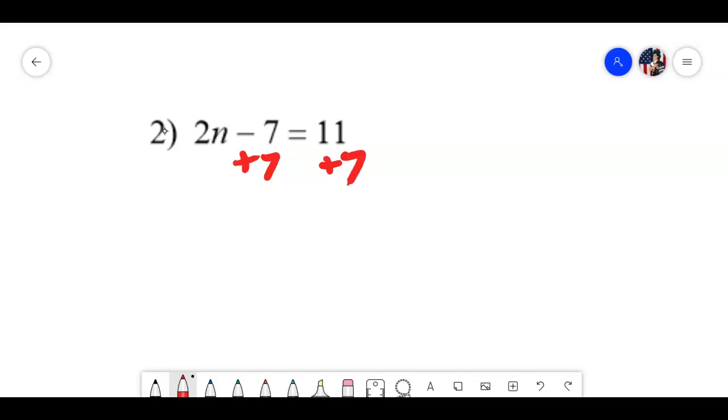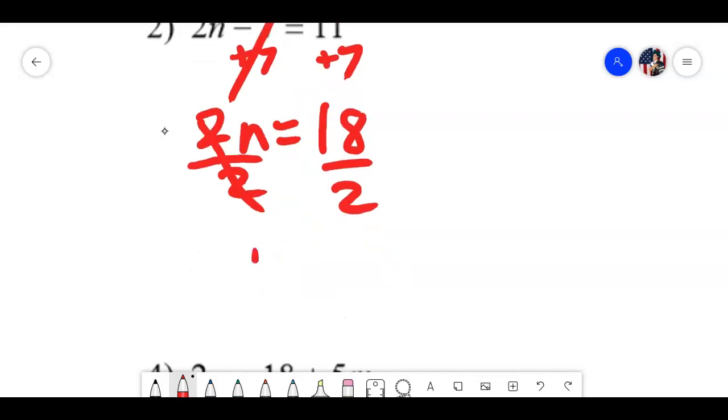Keep it equal. So the minus 7 and plus 7 cancel out. 2n equals 11 plus 7 is 18. And to get rid of that 2, we divide. And we get n equals 18 over 2, which is 9.